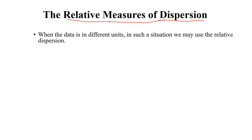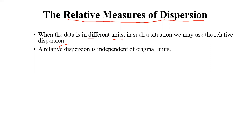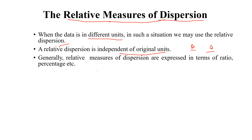So what are relative units? When the data is in different units, in such a situation we may use relative dispersion. A relative dispersion is independent of original units — for example, if we are taking two groups where the first one has a different unit and the second one has a different unit, that means it is independent of original units. Generally, relative measures of dispersion are expressed in terms of ratio or percentage.